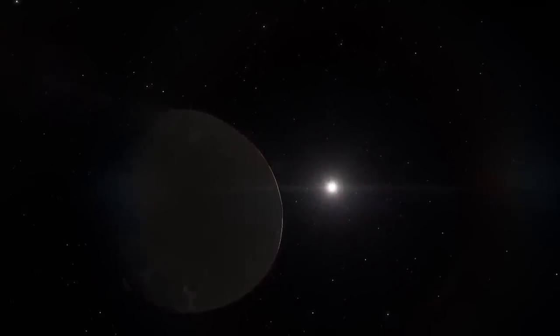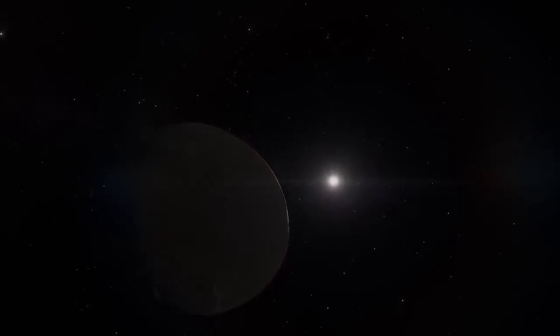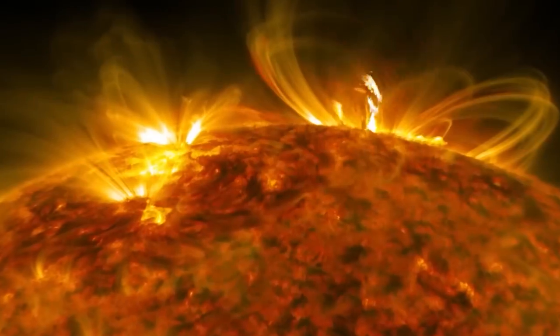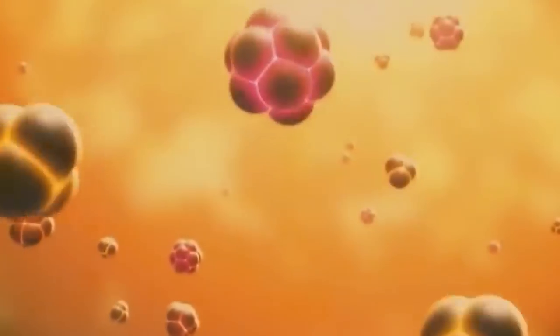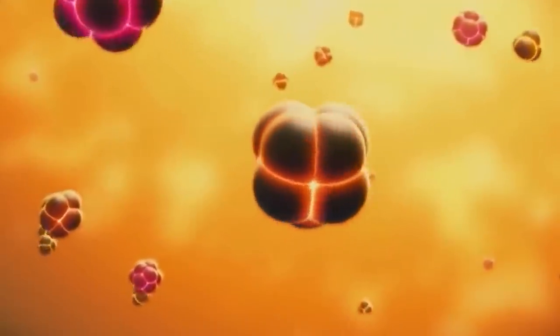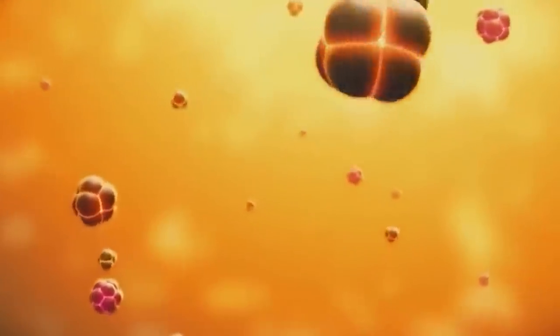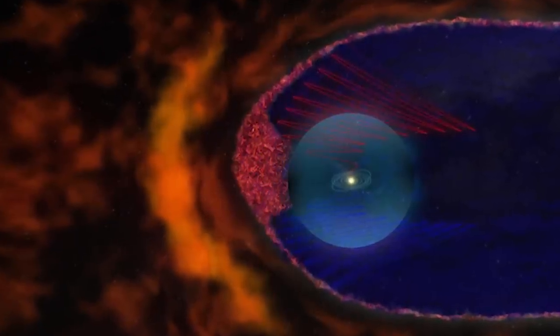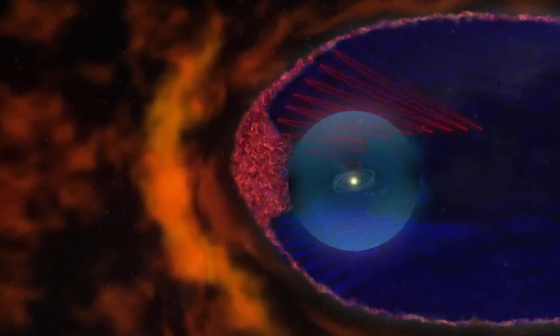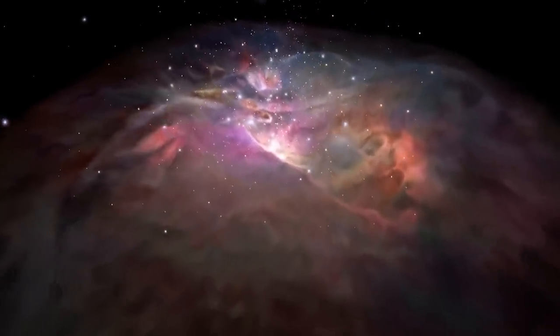But then where does the solar system end? Scientists define the limit of the solar system when the solar wind of the Sun, plasma flow made of ions and electrons, is stopped by the interstellar median. In astronomy, this phenomenon is called the heliopause.